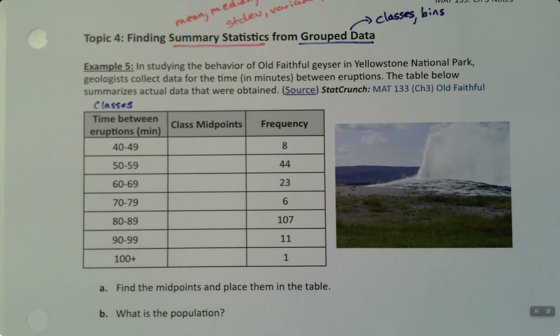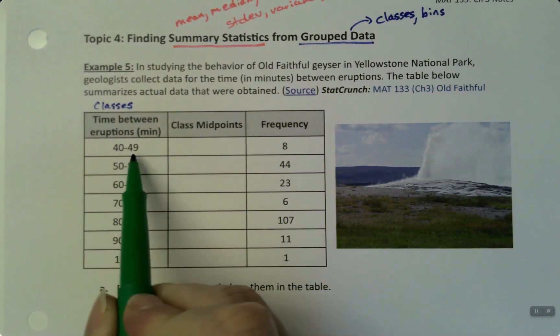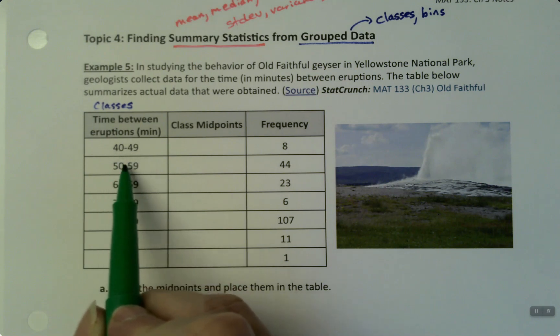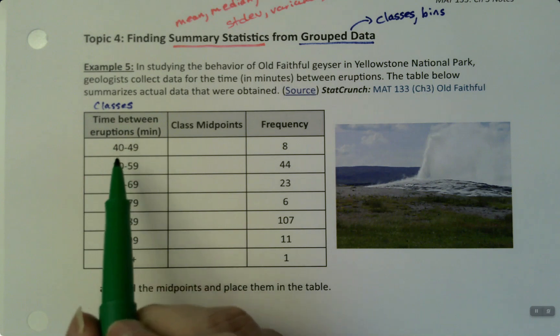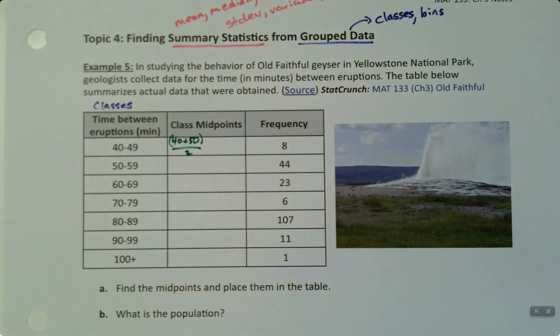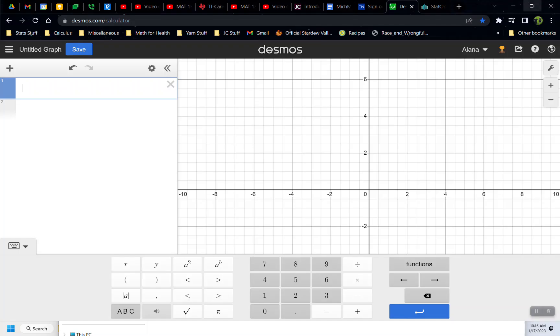But before we get that far, we need to find the class midpoints. See, the thing is that StatCrunch won't be able to handle these bins, it won't know what to do with those. So what we're going to have to do is find the midpoints and use those instead. That shouldn't be too difficult. We've done midpoints before. So we're going to take the lower plus the next lower. Do not take the upper—this is actually 49.9999999, which is not useful for us. So we take 40 and 50, because that's where the next bar starts if you were going to make a histogram.